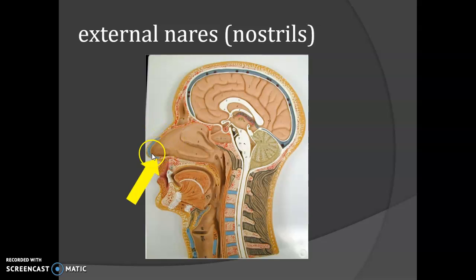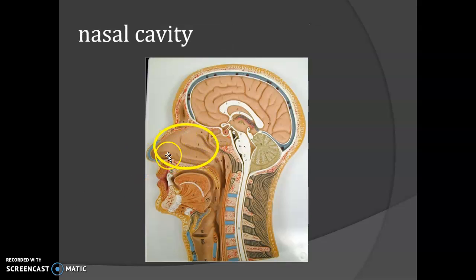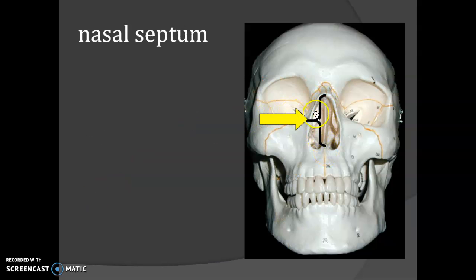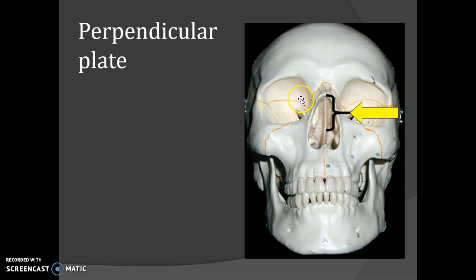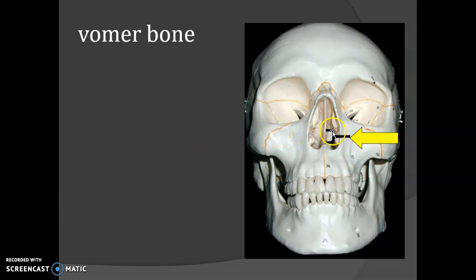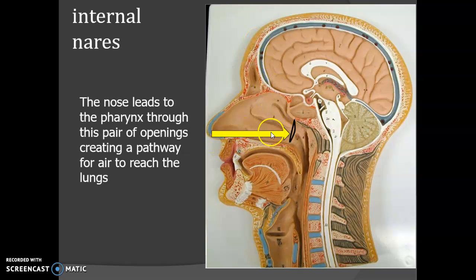Here you have the external nares, or nostrils, then you have the nasal cavity. Between them, dividing the nasal cavity, we have the nasal septum. The bony part of the nasal septum is formed by the perpendicular plate from the ethmoid bone and the vomer bone, which is one of the unique facial bones. The nose leads air into the pharynx, and you have the internal nares here creating a pathway for the air reaching the lungs.